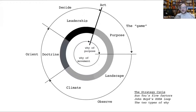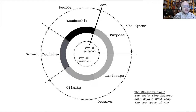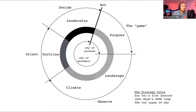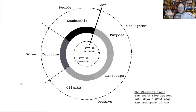Within the strategy cycle there are two 'whys': the why of purpose — your moral imperative — and the why of movement: do I make this move over that move? In chess, the why of purpose might be to win the game; the why of movement is whether to move this piece or that piece. At the very heart of this was the question of landscape — how to observe and understand it — because the more you go around the cycle, the better you get at the game.